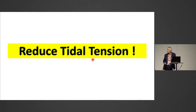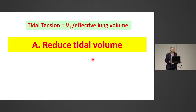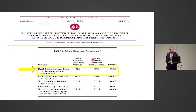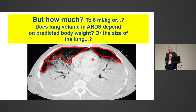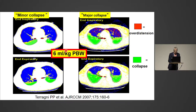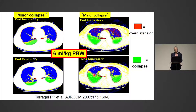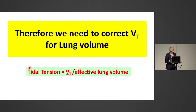So what can you do? Reduce the tension. Reduce the tidal volume — we know that reduction of tidal volume reduces mortality. But how much? To 6 ml/kg? Does the volume in ARDS depend on the predicted body weight, or the size of the small lung? In fact, if you look at this study by Terragni and co-workers, with a lung that has very large collapse and edema, 6 ml/kg increases overdistension — the red dots. But if you have very small collapse, the lung tolerates it. However, for a small lung, 6 ml/kg will be too much. Therefore, we need to correct the tidal volume for lung volume.